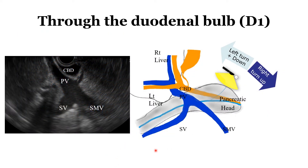I made a simple illustration for understanding EOS scan at the duodenal bulb D1. This is the posterior view of the pancreatic head and neck. This is the CBD. This is the portal vein system: SMV, splenic vein, portal confluence, and portal veins. The scope turns left and down to move to the proximal CBD and hilar portion of the liver. Right turn and up moves the scope toward the distal CBD and major ampulla.